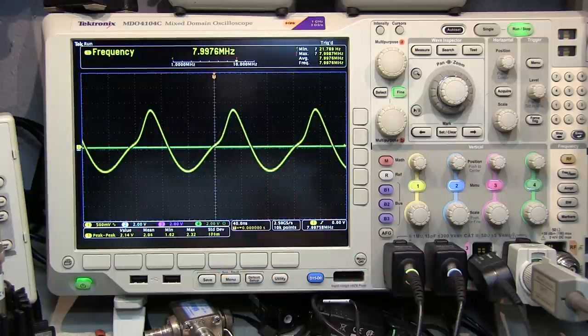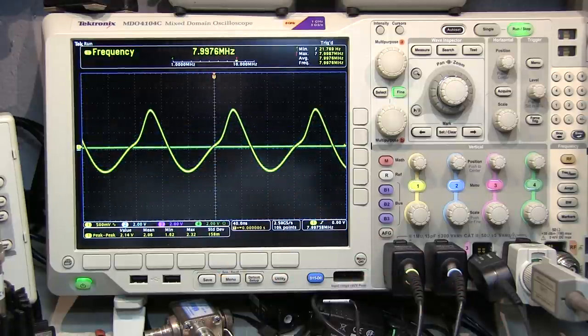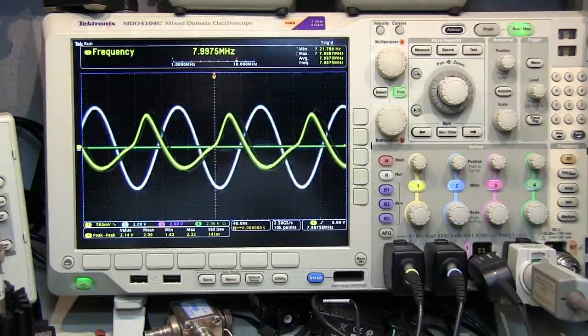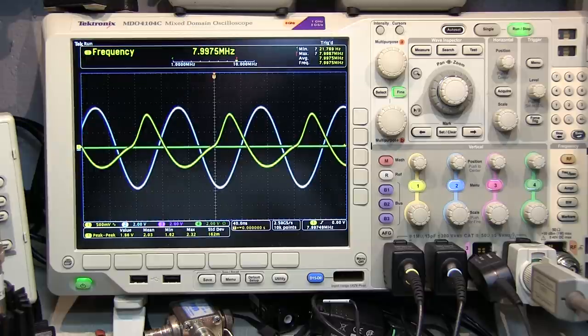Next up is our TPP1000, a 1 gigahertz probe with just 3.9 picofarads of loading. Let's connect that up to the same node. You can see the frequency dropped, but not as much, 7.9975 megahertz.